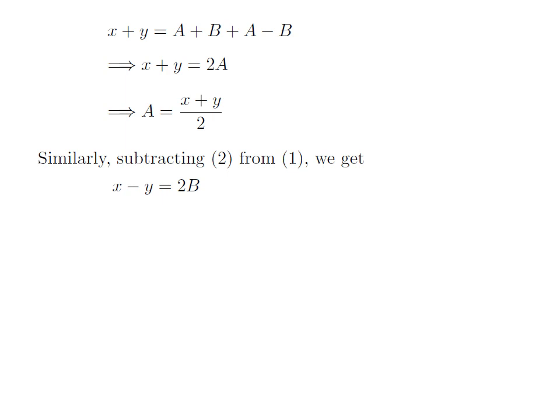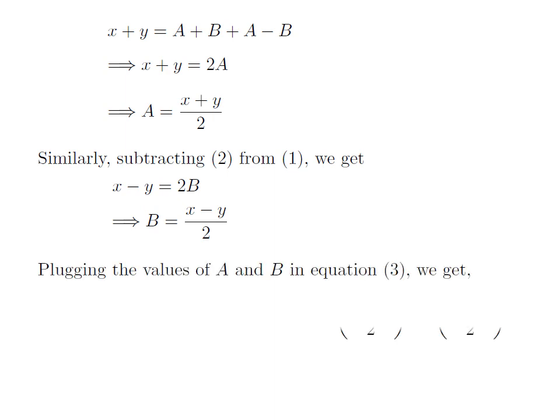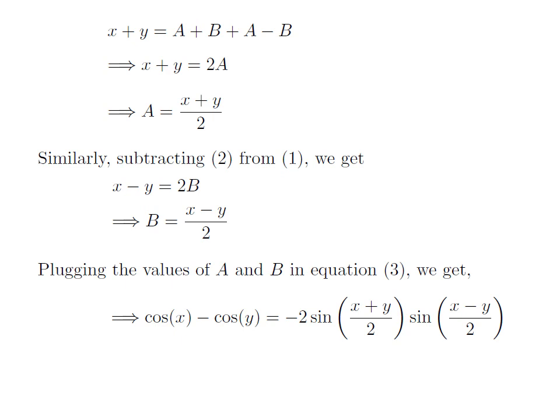In a similar fashion, if we subtract expression 2 from 1, we get x minus y is equal to 2 times of b. This implies b is equal to x minus y divided by 2. Here I have plugged the new found values of a and b in terms of x and y into equation number 3. So I got cosine of x minus cosine of y is equal to minus 2 times sine of x plus y divided by 2, into sine of x minus y divided by 2.